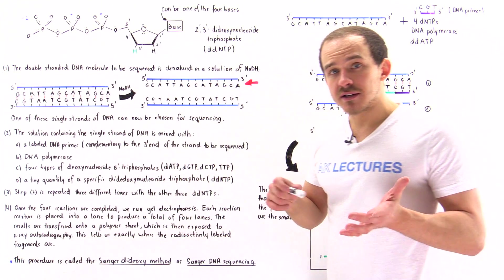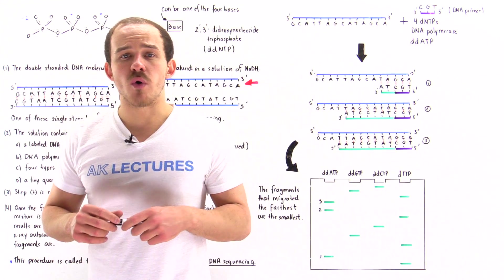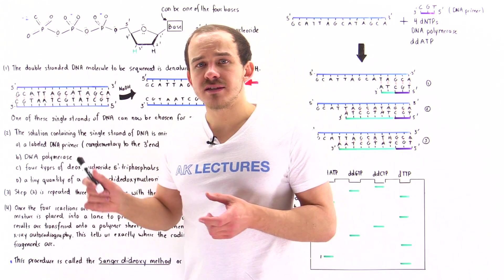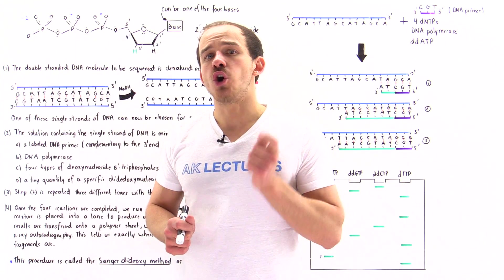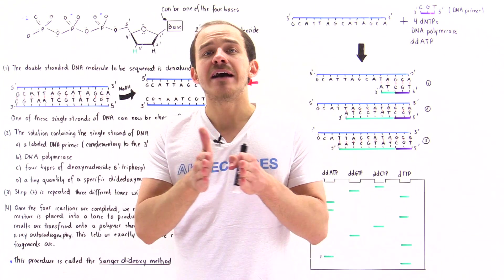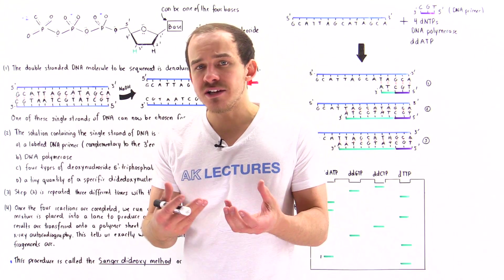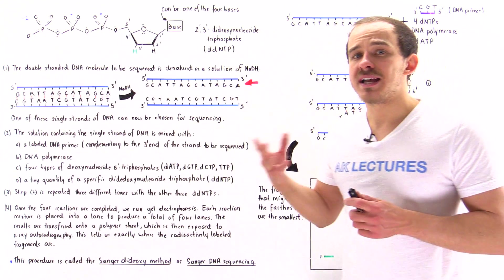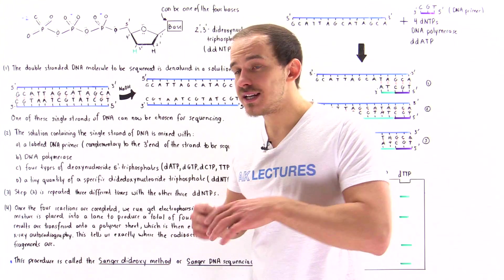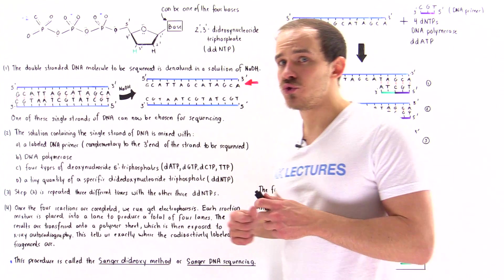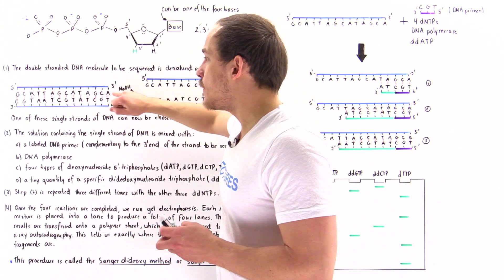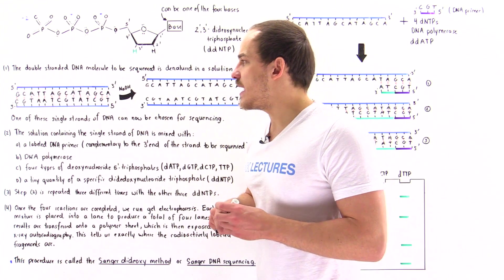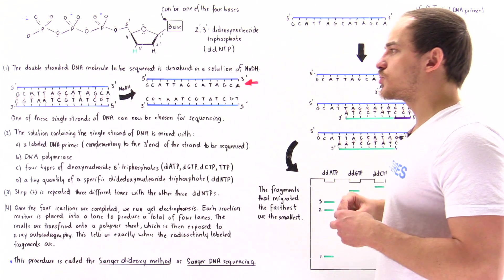In step one of Sanger DNA sequencing, we have to obtain the DNA molecule that we want to sequence. Let's suppose we have a double-stranded DNA molecule as shown on the board. The second step will involve DNA replication, which only takes place if the two strands have separated. So in step one, we want to denature the double helix structure of the DNA and separate the two strands by adding sodium hydroxide. The base will ionize the bases of our DNA molecule, disrupting and breaking the hydrogen bonds, producing two individual single strands of DNA.